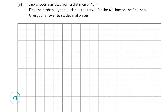Part A2 is worth ten marks. Jack shoots 8 arrows from 40 meters and we need the probability that he hits the target for the fourth time on his last shot. Essentially, in the first 7 arrows he hits 3 times, and then on his 8th shot he hits again. We use a Bernoulli trial since all shots are independent, with only two outcomes: hit or miss.